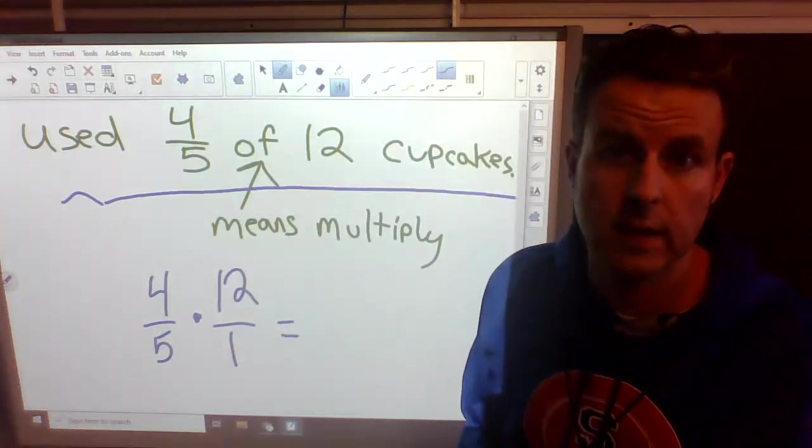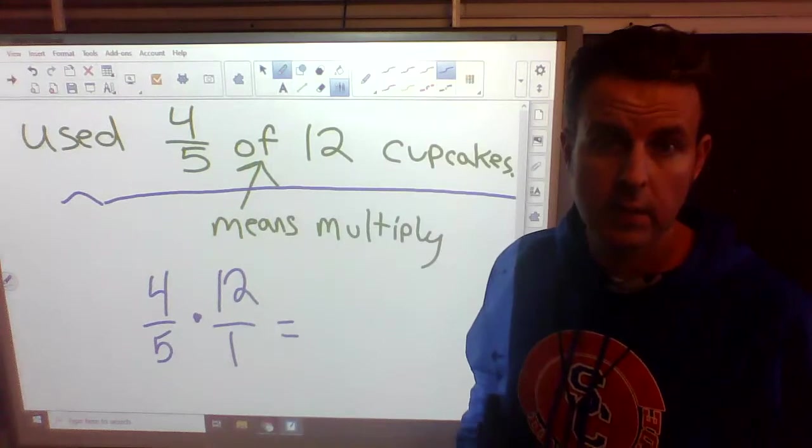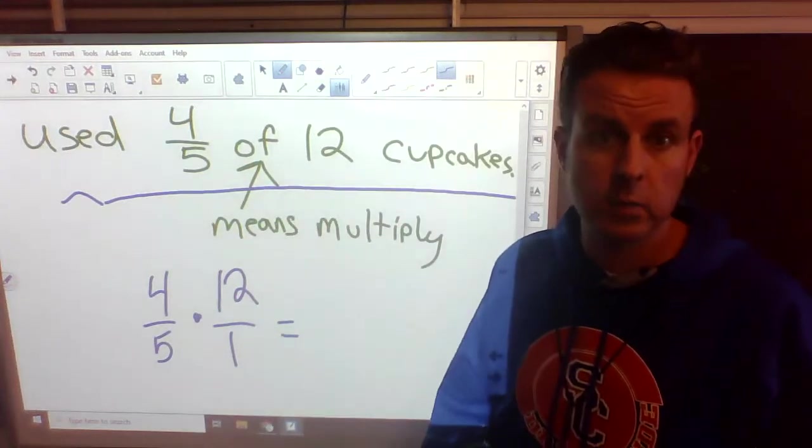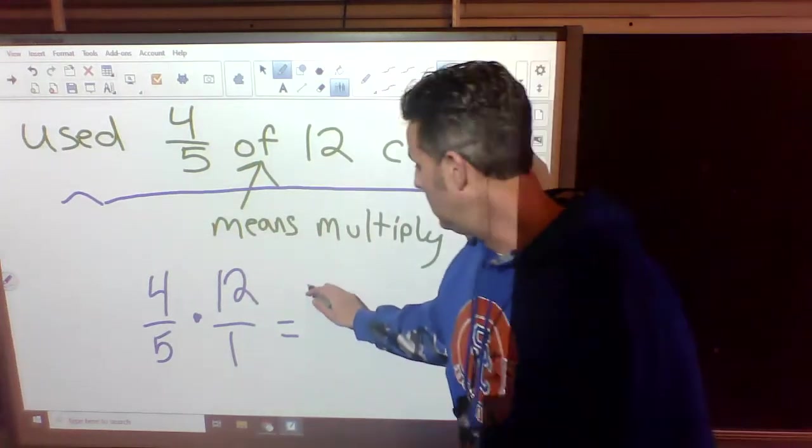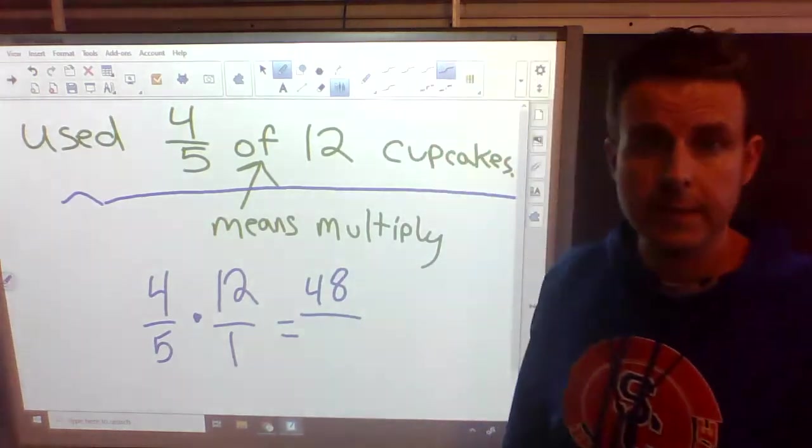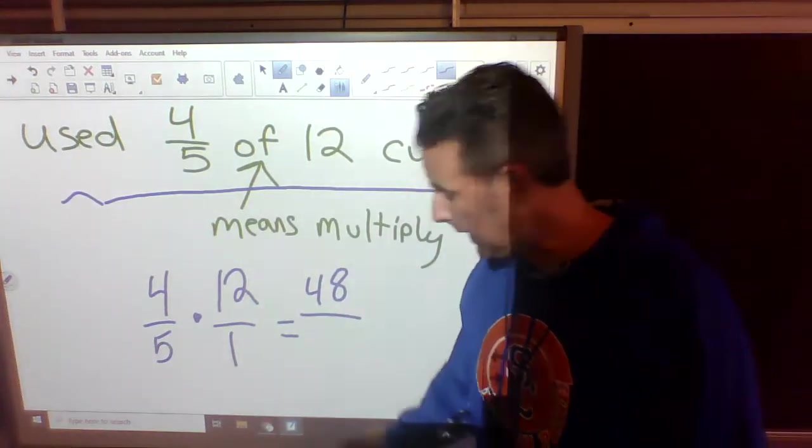12 times 4. You should know this in your head. It's one of our factors. But if you don't, work it off to the side. 12 times 4. But 12 times 4 is 48. Bottom times the bottom. 5 times 1. 5.